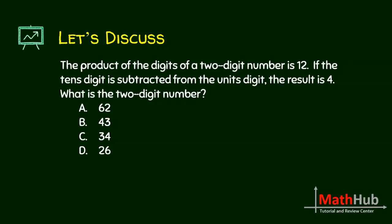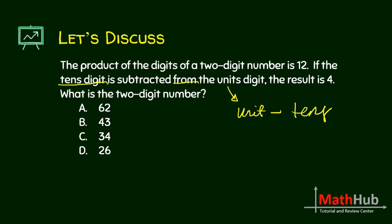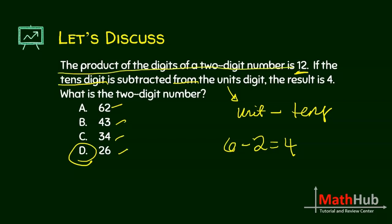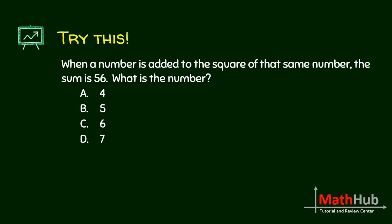Next: the product of the digits of a two-digit number is 12. If the tens digit is subtracted from the units digit, the result is 4. What is the two-digit number? The second sentence says units digit minus tens digit equals 4, which is not letter A. Looking at the choices, the product of both digits is 12 for all of them, so they all satisfy the first sentence. We look for the one satisfying the second sentence — that is letter D, since 6 minus 2 is 4.